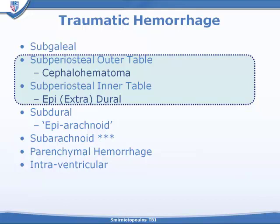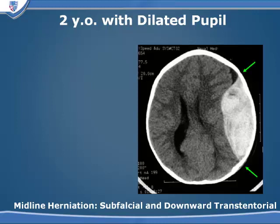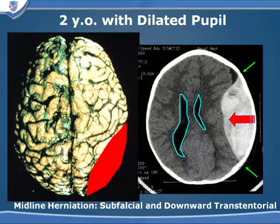The epidural hematoma is accumulating between the naked skull and the next layer in, which is the dura. The dura is composed of two different membranes, one of which is the definitive periosteum for the inner table of the skull. This is a two-year-old with a dilated pupil. The reason for the cranial nerve deficit is that this expanding epidural hematoma is causing subfascial herniation and downward trans-tentorial herniation, pressing on the third nerve as it passes through the subarachnoid space of the supracellar cistern.